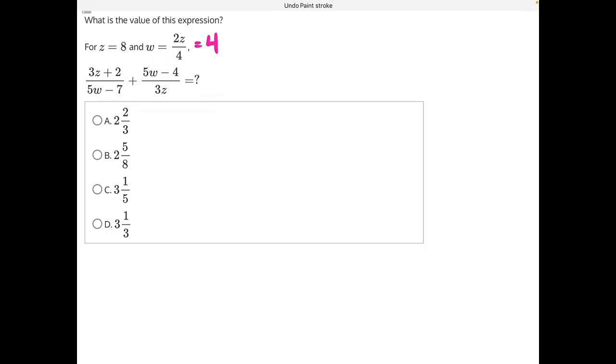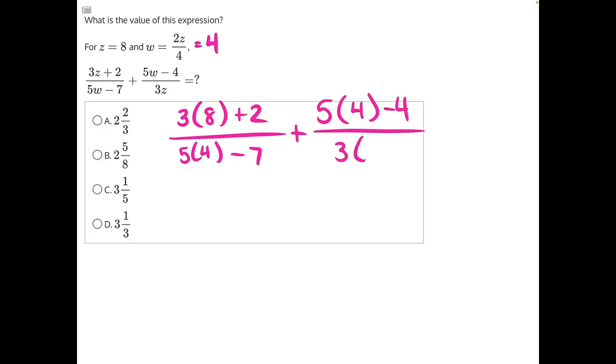We'll have 3z, z is equal to 8, plus 2 over 5 times w, which is 4, minus 7. That's added to 5 times w, which is 4, minus 4, all over 3z, which would be 3 times 8.